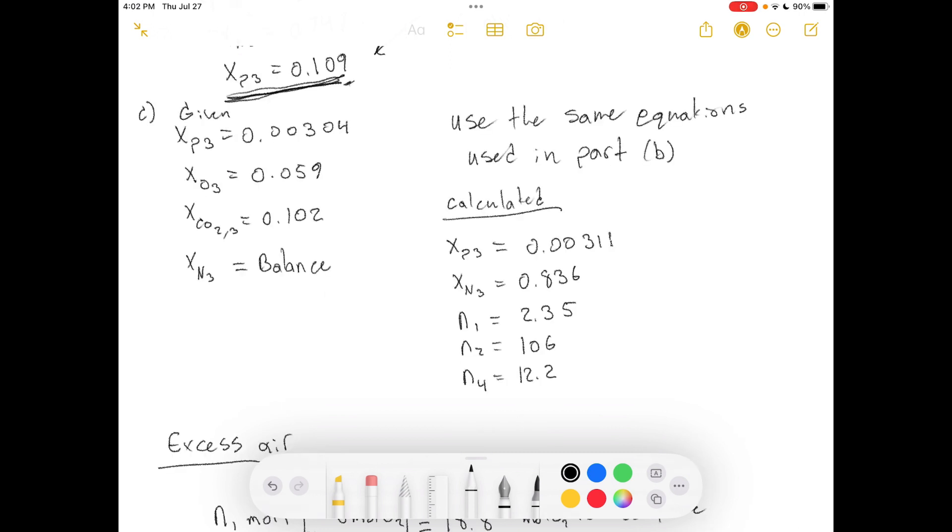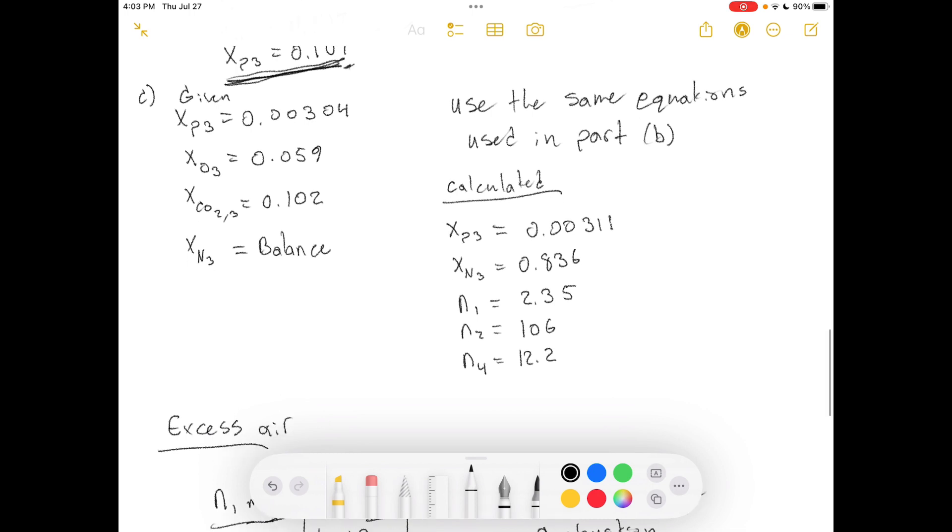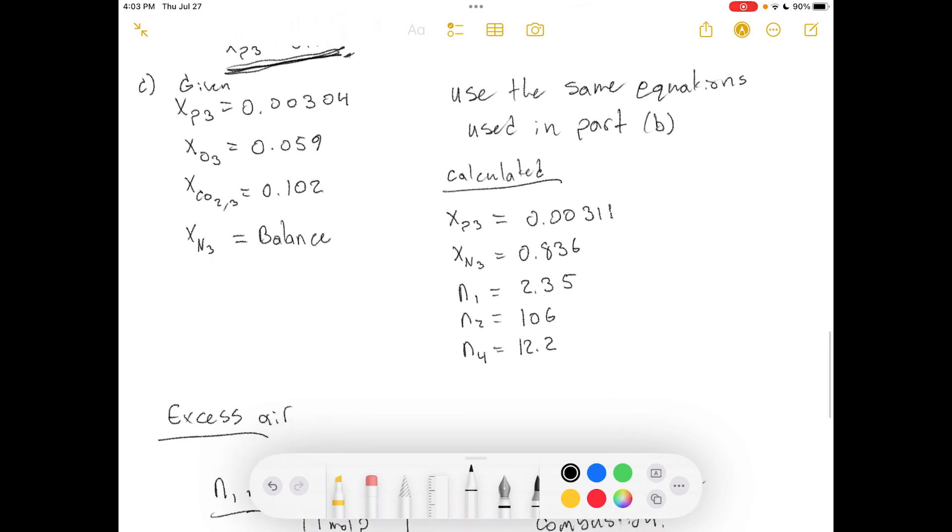So for part C, it says the technician reruns the analysis and reports new values of 0.304 mole percent pentane, 5.9 percent oxygen, 10.2 percent carbon dioxide, and the balanced nitrogen, verify that this result could be correct, and, assuming that it is, calculate the percent excess air fed to the reactor and the fractional conversion of pentane. So basically, we just have to use the same equations and we plug in our values that they gave to us, the new values for these things. Of course, we can leave this one out because we're assuming that that's unknown, and then we can compare the given value to the actual value.